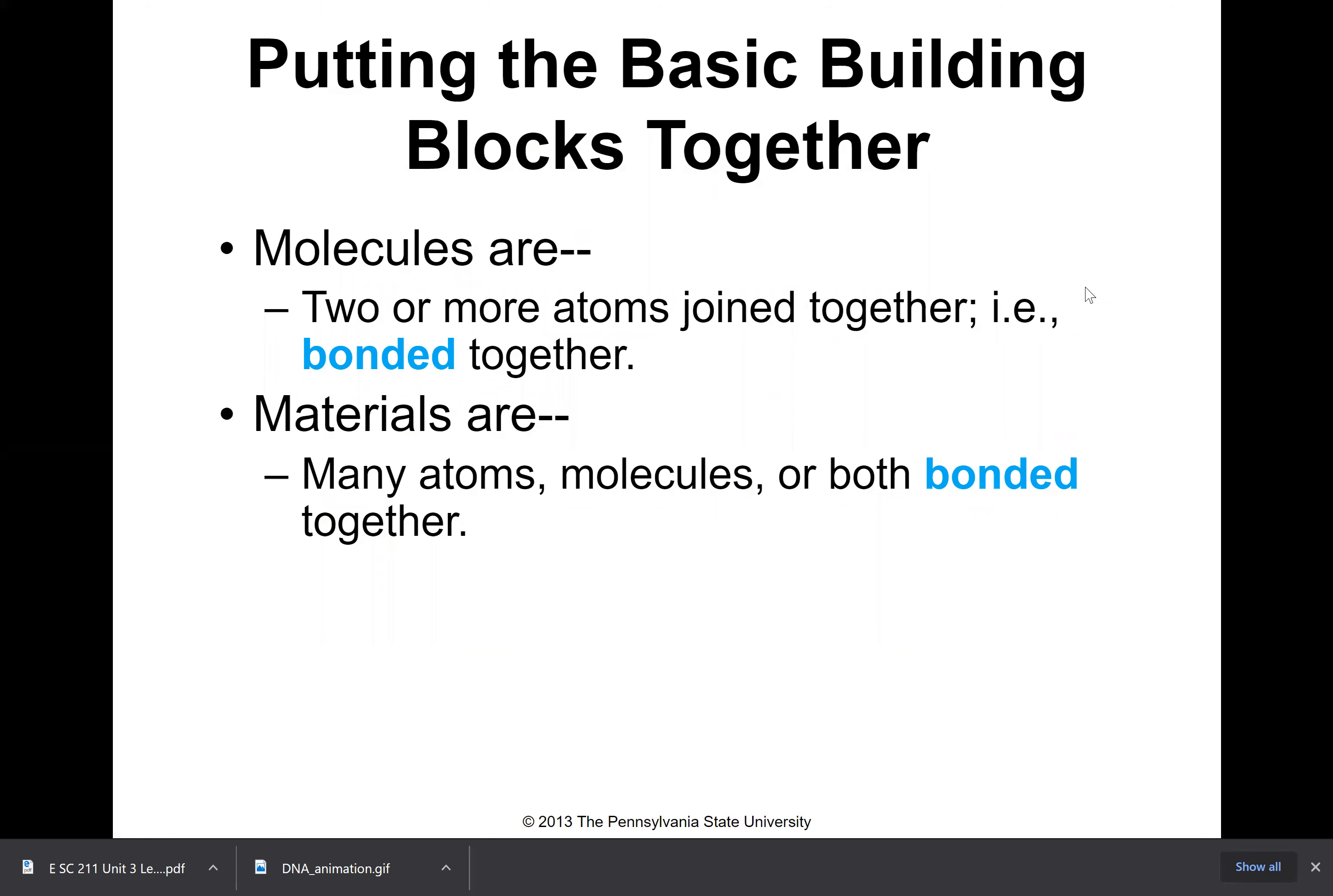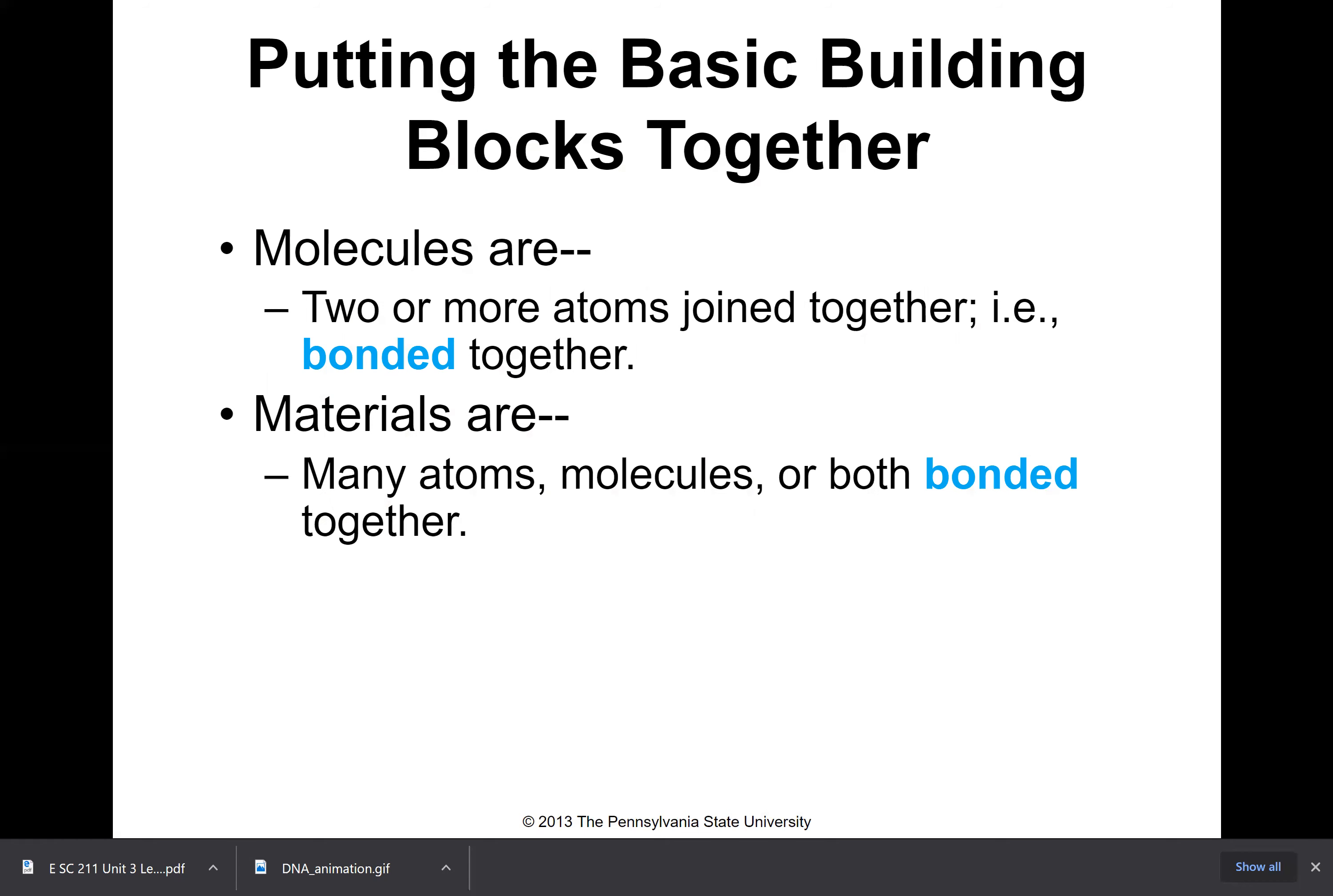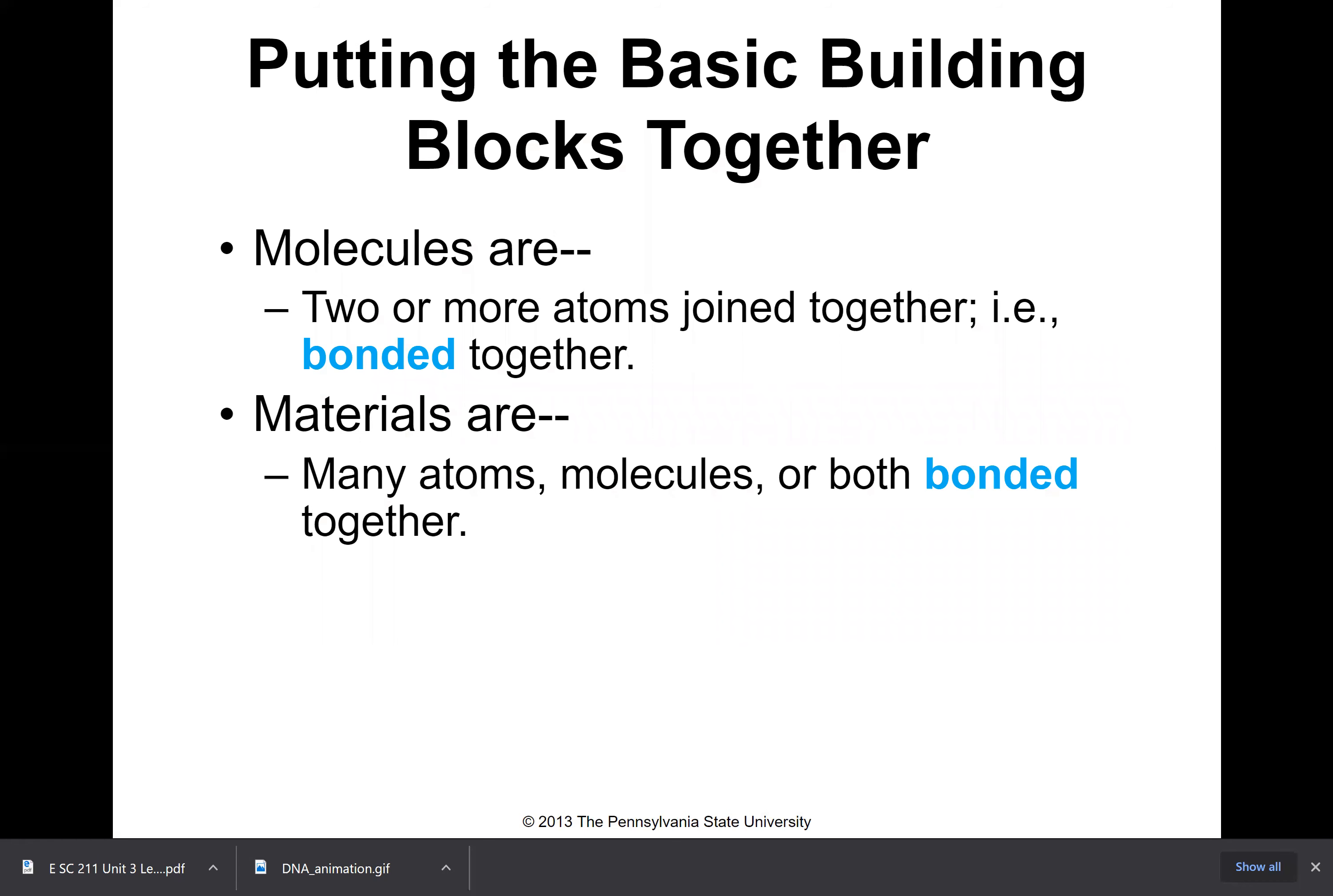Putting the basic building blocks together—I've talked about atoms and now I'm going to talk to you about molecules. Molecules are two or more atoms joined together or bonded together. Materials are many atoms, molecules, or both bonded together. So that ends lecture one, which was mostly about atoms, and just to let you know that molecules are when two or more atoms are joined together, and materials are taking molecules, sometimes atoms and molecules, those joined together—that's materials. That would be the end of this section.